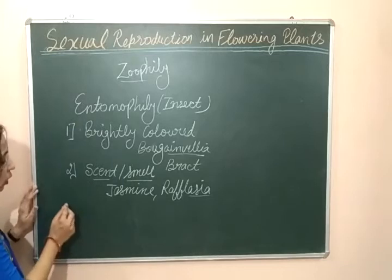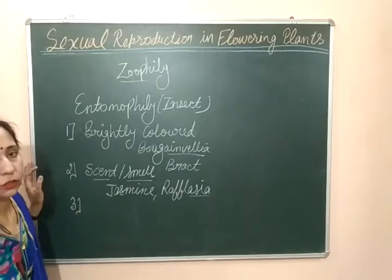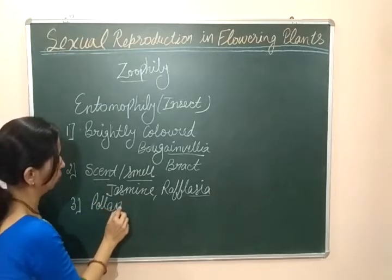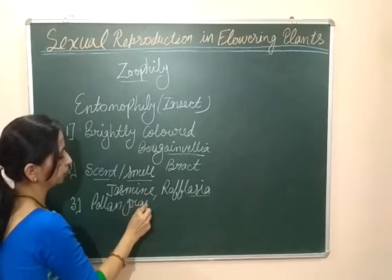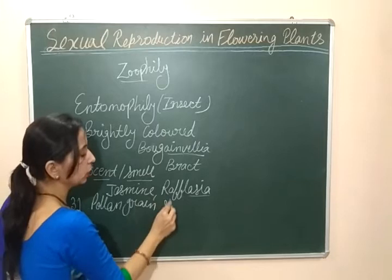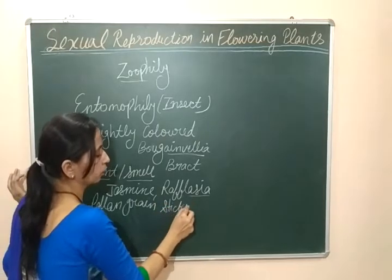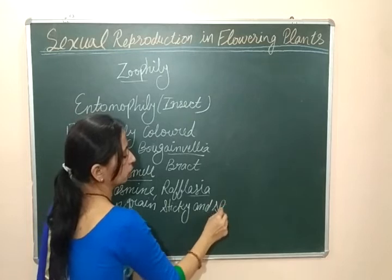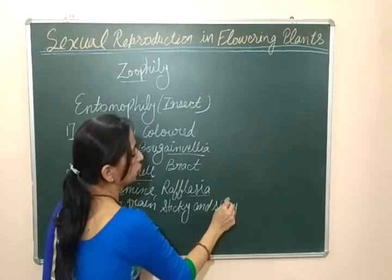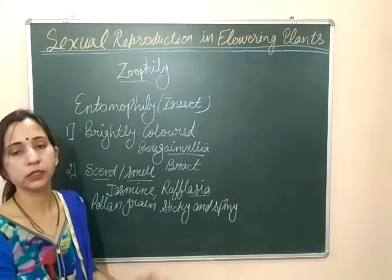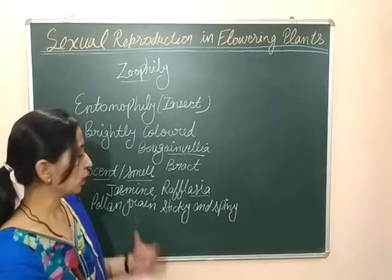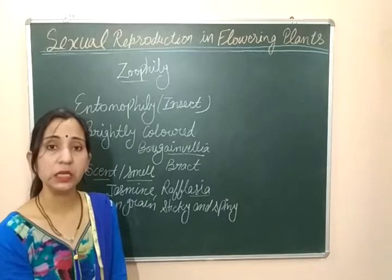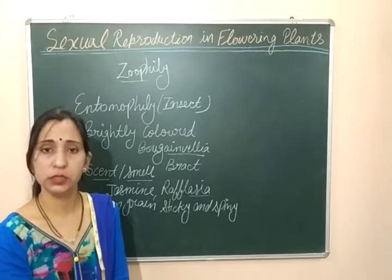The third important characteristic: the pollen grains should be sticky and spiny. In flowers which use insects as pollinating agents, the pollen grains should be sticky and spiny so that they can be easily attached to the body of insects.